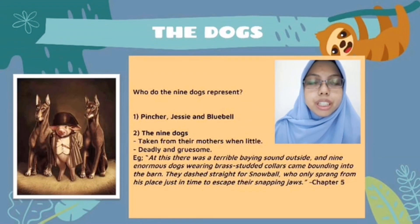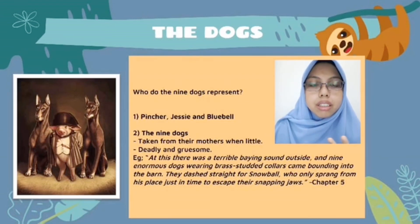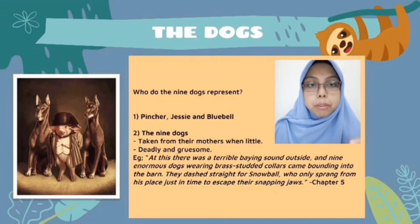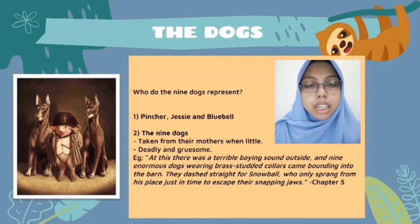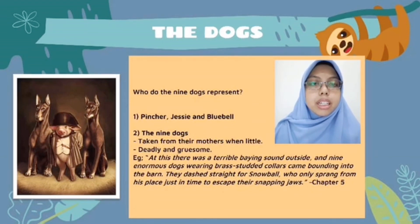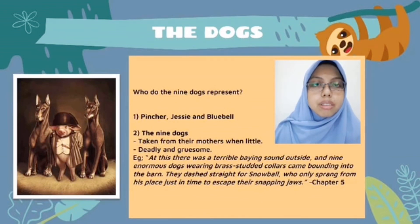I am Siti Sara Binti Mazamri and today I will be explaining about the dogs in Animal Farm. There are two categories of dogs in this story. The first is Jesse, Bluebell, and Fincher — three dogs where Jesse and Bluebell are the mothers of the nine dogs, and Fincher is the only male in this category. Jesse and Bluebell were also part of the Battle of the Windmill. The second and more interesting category is the nine dogs, who are Napoleon's bodyguards.